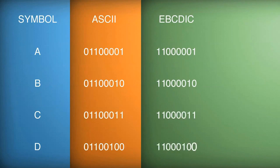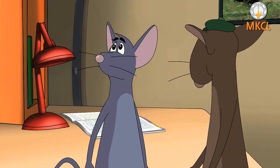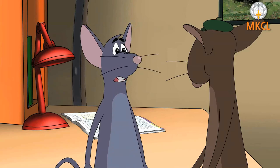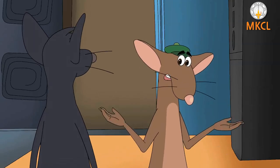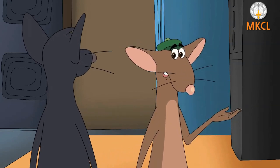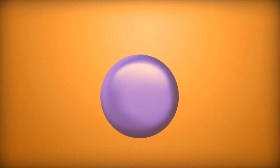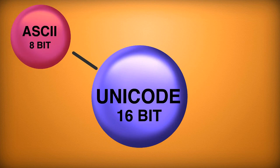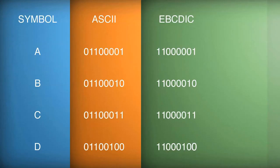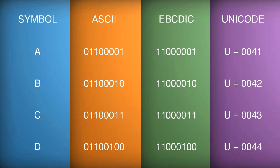But do these binary coding systems represent all languages? Chinese or Tamil characters are very different from English characters. This was the same problem felt, as languages like Chinese have a lot of characters and using earlier coding systems is difficult. So a new system called Unicode was established, which supports both ASCII and EBCDIC systems, but uses 16-bit codes instead of 8-bit codes.